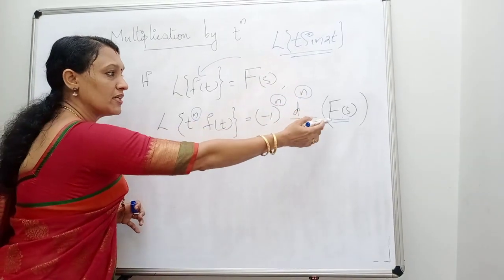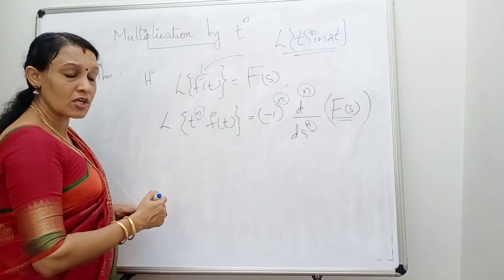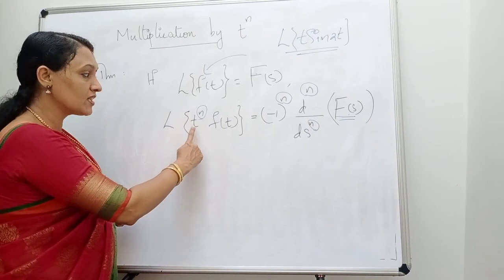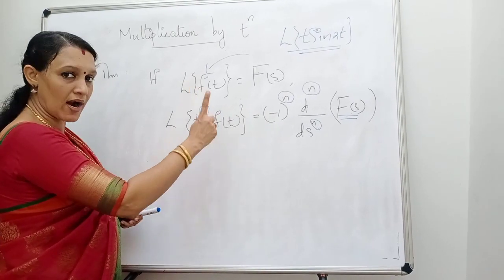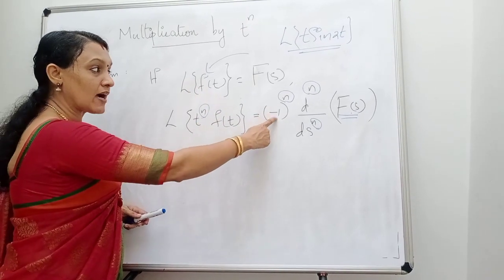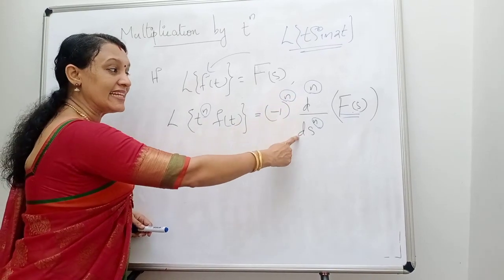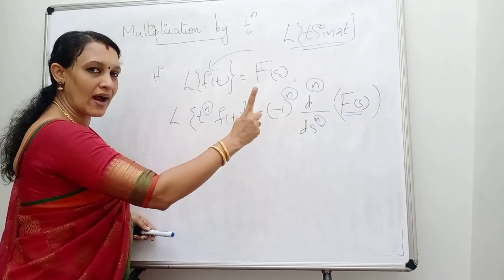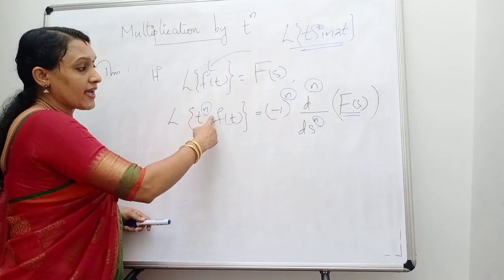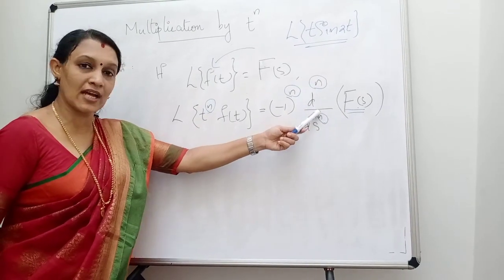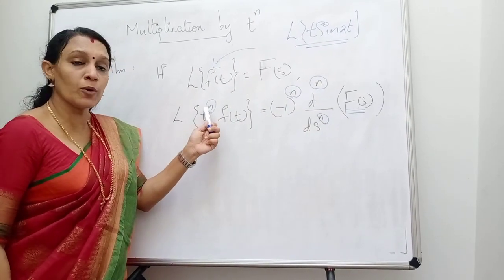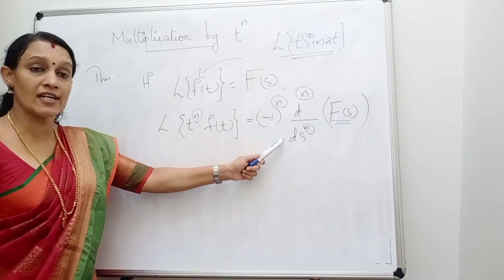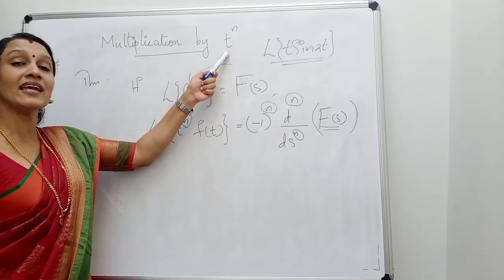You differentiate F(s) n times. If f(t) is multiplied by t, then n = 1, so it is (-1)^1 · d/ds of F(s) — differentiate F(s) one time. If it is t², differentiate F(s) two times. If it is t³, differentiate F(s) three times. This formula is called multiplication by t raised to n.